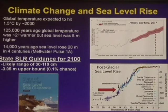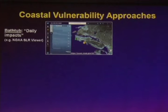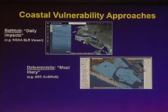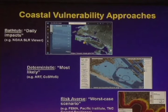100 centimeters of sea level rise displaces about 100 million people globally. The different types of models can be bent into a few approaches: the sea level rise viewer is great for looking at daily impacts, bookending the low end; then there are deterministic, physics-based models like Cosmos trying to get the most likely answer in the middle; and then more risk-averse approaches like FEMA or the Pacific Institute for worst-case scenarios. These are all valuable approaches — you can look at your low-end to high-end risk. They can all be used together depending on the sensitivity of what you're looking at.